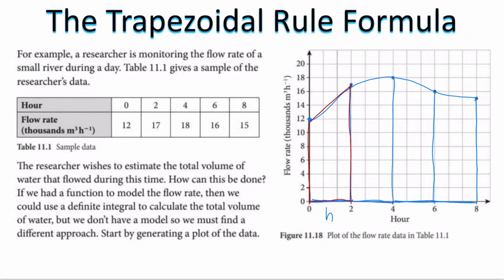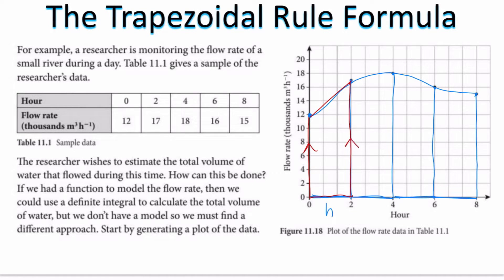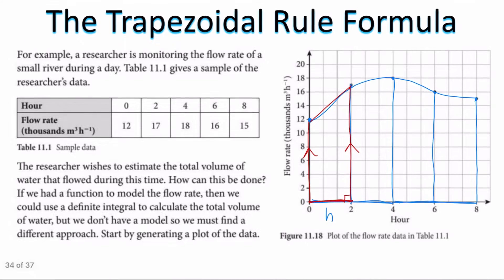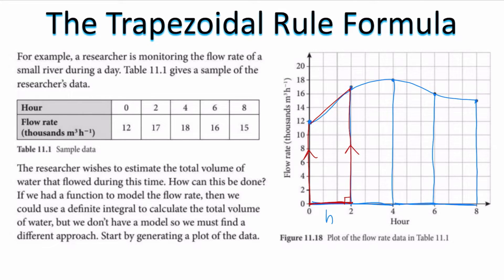A trapezoid is a quadrilateral that has one pair of opposite sides that are parallel. Perpendicular to those bases is my height, which is two. These are my two parallel bases. The area of a trapezoid is equal to one half the height times the sum of the two bases. So I can connect all of these dots with a straight line, then use trapezoids to figure out the area of each one underneath the curve, add them together, and that gives me an estimate.